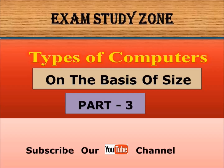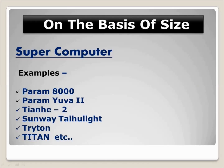So let's get started. The first one is the supercomputer. A supercomputer is large in size and is amongst the fastest machines in terms of processing speed.